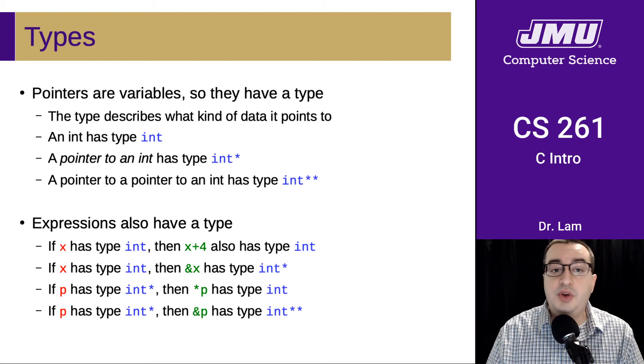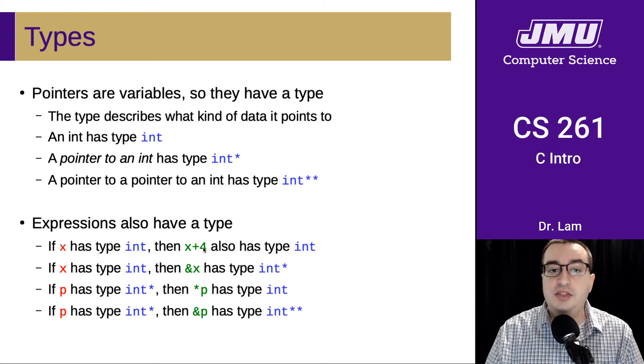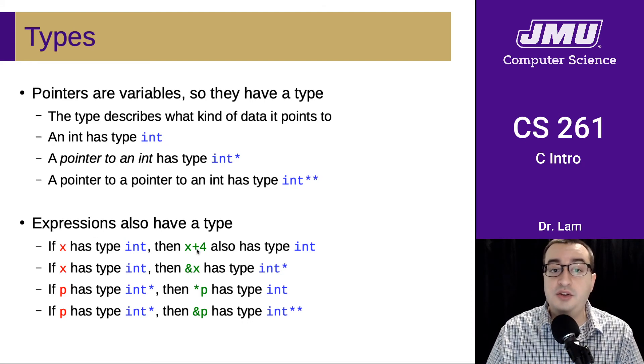All right. So expressions also have a type. So if X has type int, then X plus 4 is also going to have a type. And its type is going to be int. If X has type int, then the address of X is going to have type int star.